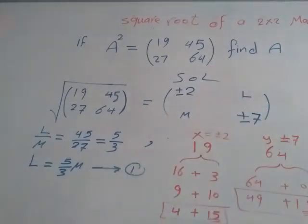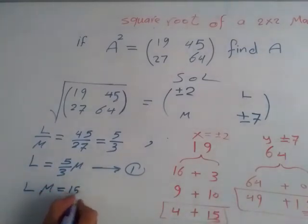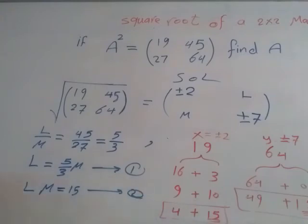Now I can go here and here and fill it up. This is positive or negative 2 and this one here positive or negative 7. And to find L and M, as I told you, L times M is 15. This is your second equation. Solve this together, you will get L and M. So let's do that. Substitute from 1, L equal 5 over 3 M, so I take this out, put 5 over 3 M times M equals M squared.